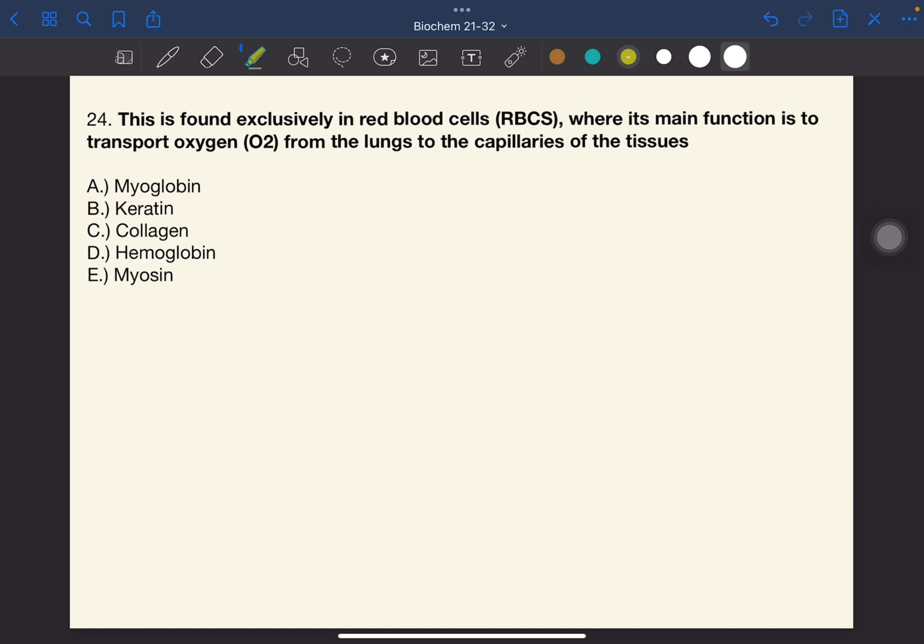Number 24. This is found exclusively in red blood cells where its main function is to transport oxygen from the lungs to the capillaries of the tissues. The answer to this one is D, hemoglobin.